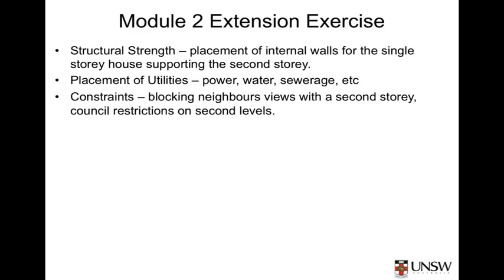Similarly, power and lighting locations can be considered at a high level in conceptual design to minimise the costs associated with the second storey as we move into preliminary design. Additionally, the initial designs should consider the capacity of the pipes and wiring to cope with increased flow as we move from one floor to two. There are also likely to be constraints on how a second storey can be built — both formal council-type constraints and self-imposed constraints to keep the peace with neighbours. For example, the placement of windows may invade neighbours' privacy.